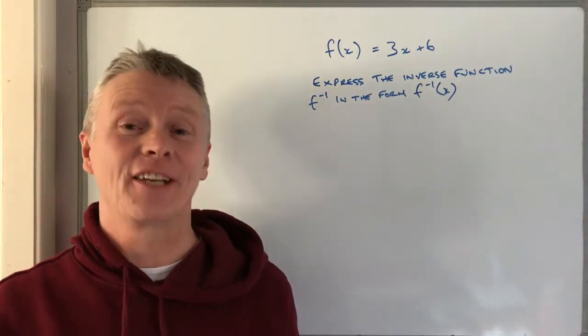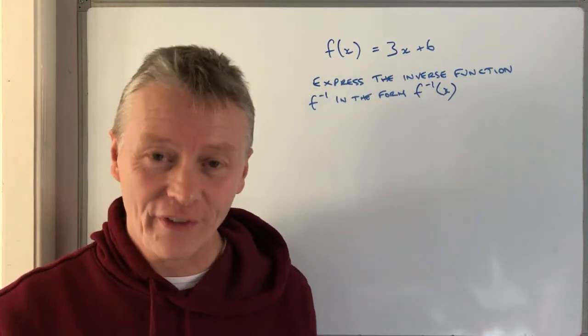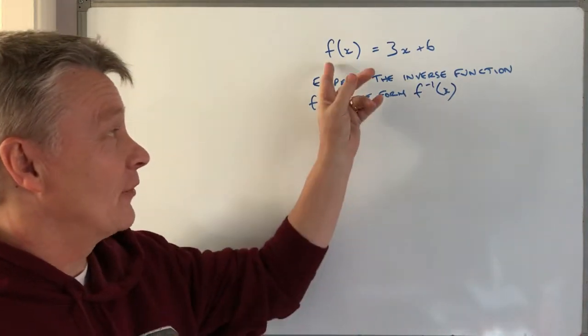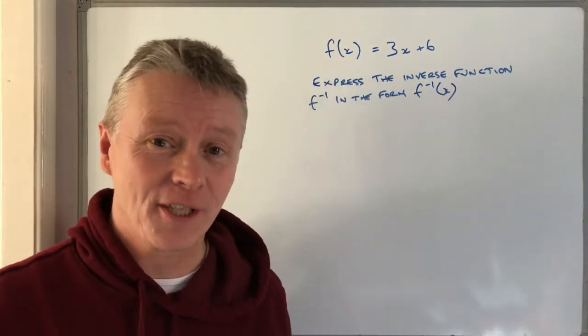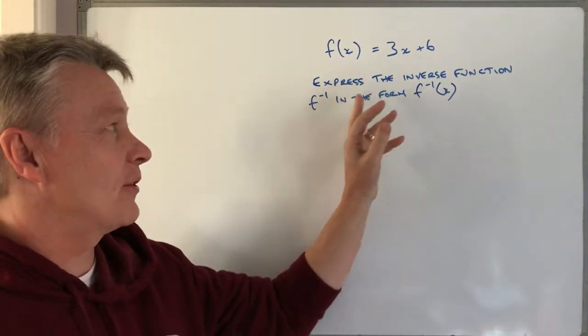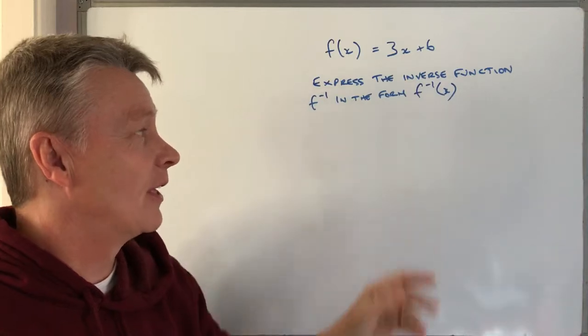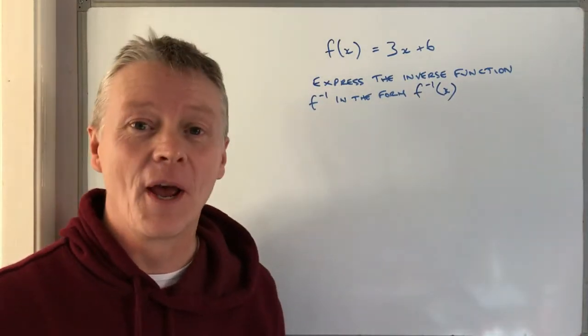Hi and welcome to the second video in the playlist on dealing with inverse functions. This particular question, I've got function of x equals 3x plus 6 and we've been asked to express the inverse function f to the power of minus 1 in the form f to the power of minus 1 brackets x.